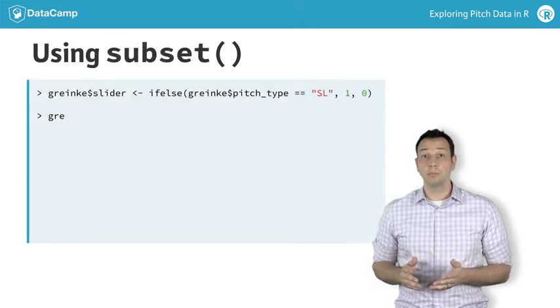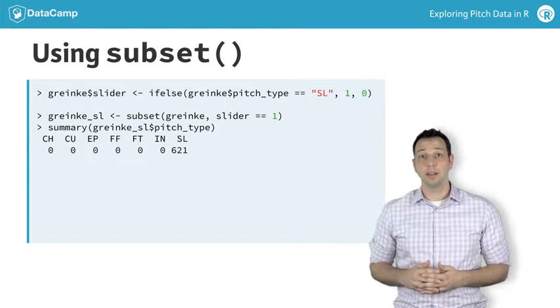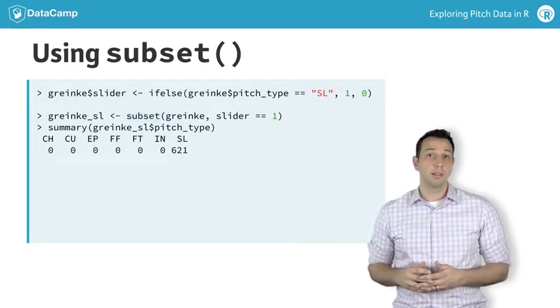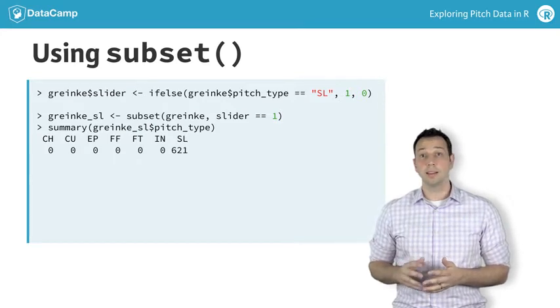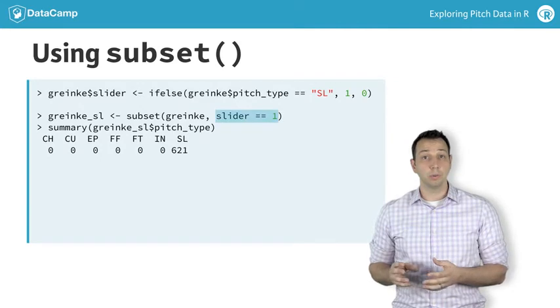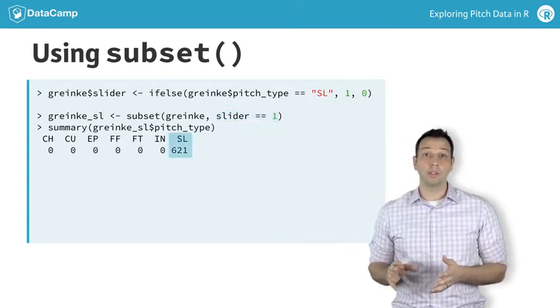Now that we've made a new variable to indicate a pitch was a slider, we can use this to easily subset our data. The subset function is an easy way to do this. Naming the new dataset greinke_sl, we tell R to keep any data where the slider variable is equal to 1. Notice here that our new data includes only sliders.